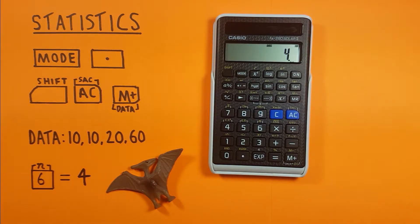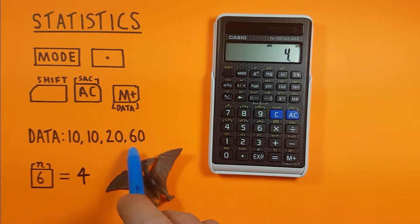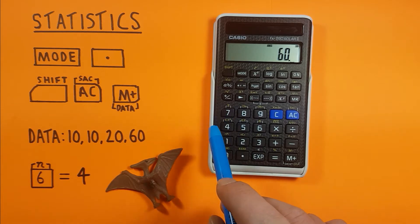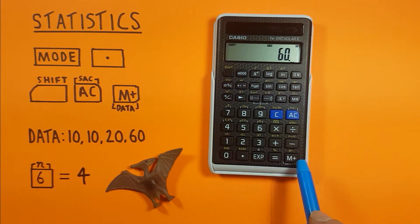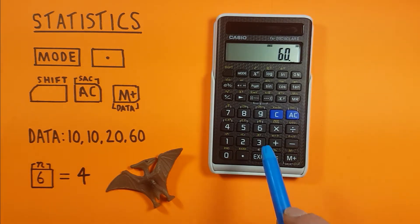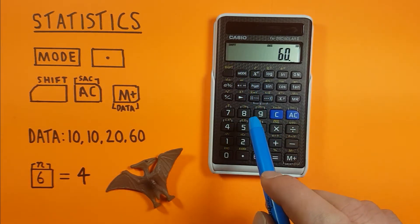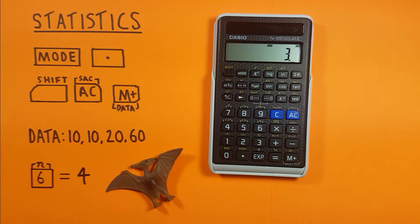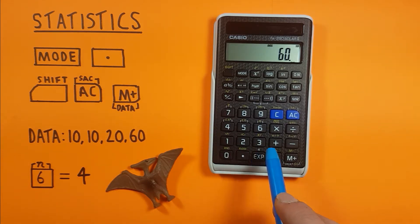Let's say we made a mistake and didn't want that 60 in our data set. If we want to get rid of it we can just press 60 and then use the shift of M plus which is M minus, which takes something out of our data set. We can check to see if this works by pressing shift 6 again. Yep, our data set now is 3 so we've taken this one out, but in reality we do want that in there so I'll just put it back in - 60 M plus.